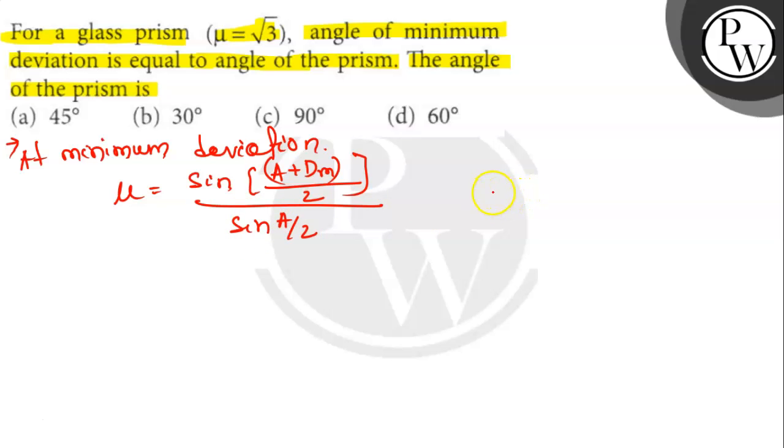What is given here? Dm equals A. So μ equals sin A divided by sin A by 2, which equals 2 sin A by 2 times cos A by 2.